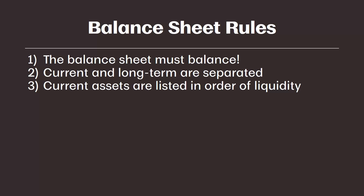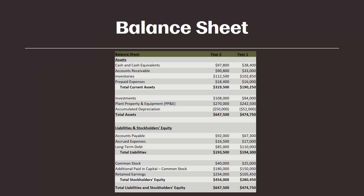Let's check back in with the sample balance sheet to make sure these two items are true. We can see that current assets are separate from long-term assets, and current assets are listed in order of liquidity, so we meet both of those rules. Current liabilities are listed first, and then we have the long-term liability, so we're meeting the rule on both assets and liabilities.